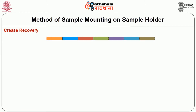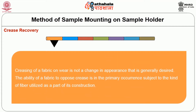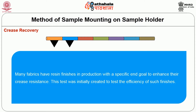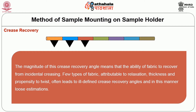Next is crease recovery — another important serviceability property of woven fabric. Creasing of a fabric on wear is not a desirable change in appearance, unlike pills, snags, or abrasion. The ability of a fabric to resist creasing depends primarily on the kind of fiber used in the woven fabric and its construction. Many woven fabrics have resin finishes applied to enhance crease resistance. The test was initially created to evaluate the efficiency of those finishes. The magnitude of the crease recovery angle indicates the ability of the fabric to recover from incidental creasing. Certain fabric types attributed to relaxation, thickness, and propensity to twist often lead to ill-defined crease recovery angles, and loose yarn estimations also contribute to crease formation.